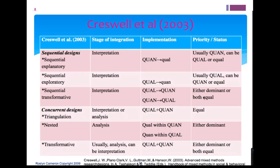When we talk about the nested — or embedded — design, integration is always at the analysis stage. That embedded design involves secondary or supplementary data to one method or the other, so it's important to analyze that data together before reaching the final interpretation stage. Either one can be dominant. In transformative designs, either can be dominant or both equal, but mostly the theoretical component is more dominant.